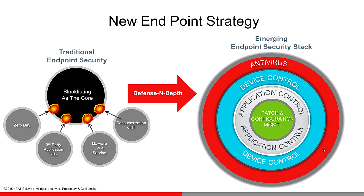To finalize the defense in depth strategy, we still suggest having AV in the overall solution. Some newer application whitelisting vendors may say AV is not required, but that's not really a professional security approach we would recommend at Heat Software. AV still has a number of benefits: first, what's to stop an administrator adding known bad to a whitelist? AV can double-check that. But also for removal of a virus — application whitelisting will prevent execution in memory, but the malware could still exist on the hard disk, and we may need a more advanced technique to remove it. Our AV solution provides that capability.